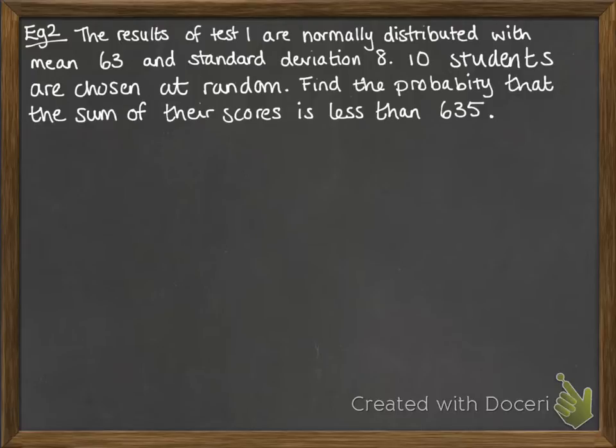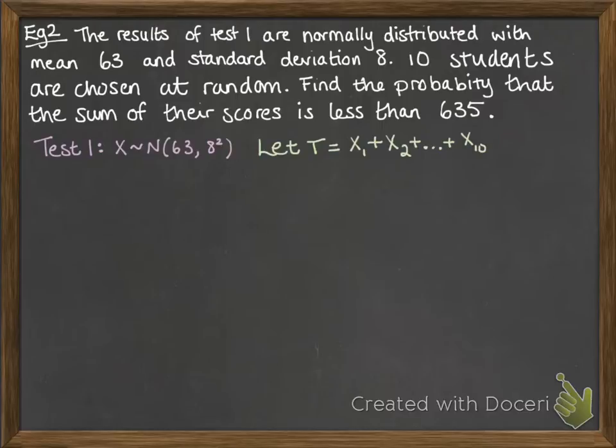Second example, taking the same situation from before, but we're just looking at test one. Now 10 students are chosen at random, we want to find the probability that the sum of their scores is less than 635. So we're just looking at test one, and we're taking a number of results from the X distribution, 10 to be precise, and we're going to add them up. So I'm going to define T as being the total of those 10 scores. And then T will be normally distributed with a mean of 630, so 10 lots of 63, and a variance of 640, which is 10 lots of 8².